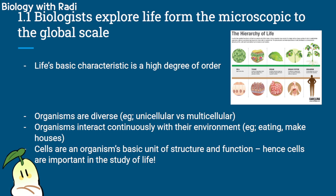The first concept is that biologists explore life from the microscopic to the global scale. The whole theme of Chapter 1 is basically that life's basic characteristic is a high degree of order. A diagram shows how a cell clumps together to create tissues, and tissues clump together to create an organ, and so on — meaning that the complexity and functions of an organism come from its hierarchy.